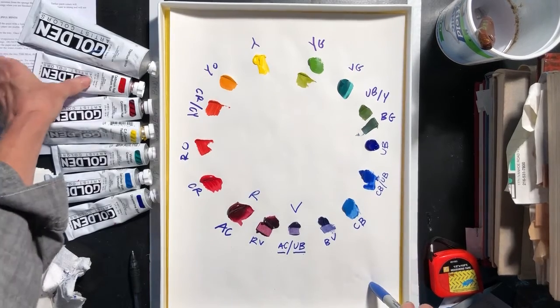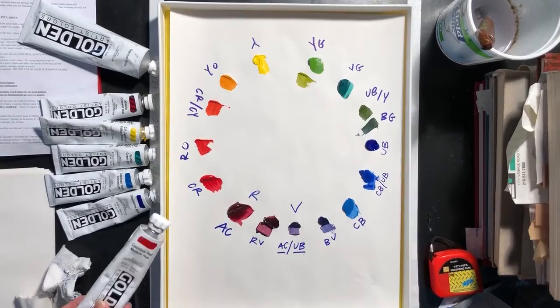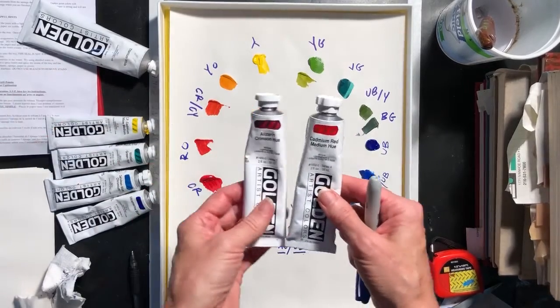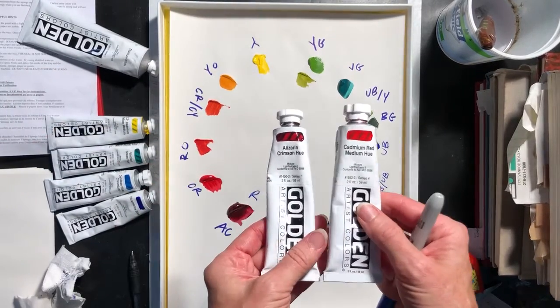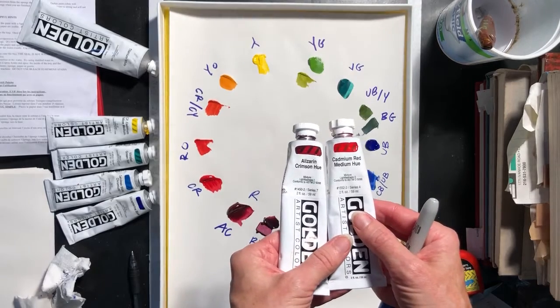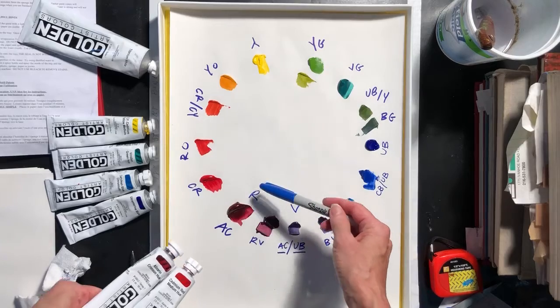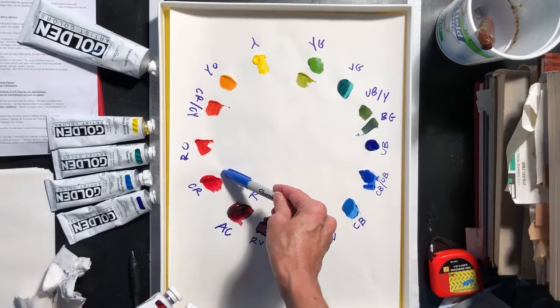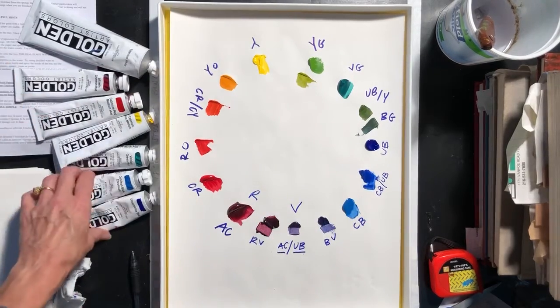I'm going to show you the basic primary colors first. You have two reds. So you've got your cadmium red and your alizarin crimson. They're both reds, quite different looking reds. This is the alizarin crimson. This is the cadmium red.